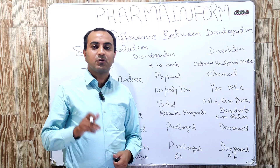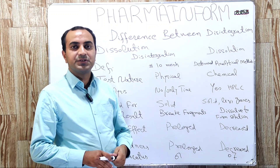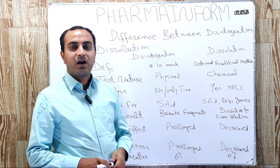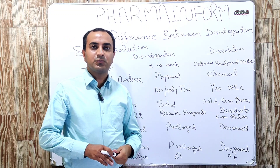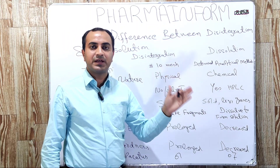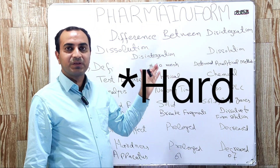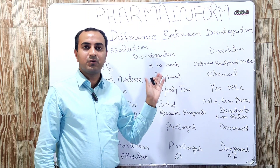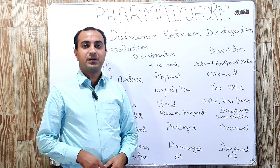The first difference will be discussed on the basis of definition. What is disintegration? Basically, disintegration is an in vitro test which is performed to check how much time is required for a dosage form to break down into small fragments, and these small fragments pass through mesh number 10 leaving behind no solid residue. So disintegration is a test for determining the time for breakdown of the dosage form into small fragments.